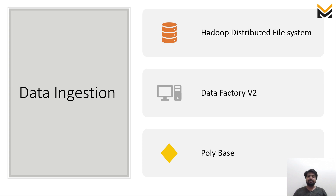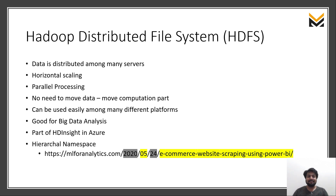Data Ingestion mostly covers three services provided by Azure: the first one is HDFS, the Hadoop Distributed File System; the second is Data Factory version 2; and the third is Polybase. In HDFS, as the name suggests, data is distributed among different servers. For example, if I have 10 GB of data and a server that can accommodate a maximum of 1 GB, we take 10 servers and save the data equally distributed among all of them. The biggest advantage this provides is parallel processing, which is not possible in a single server like an SQL Server.